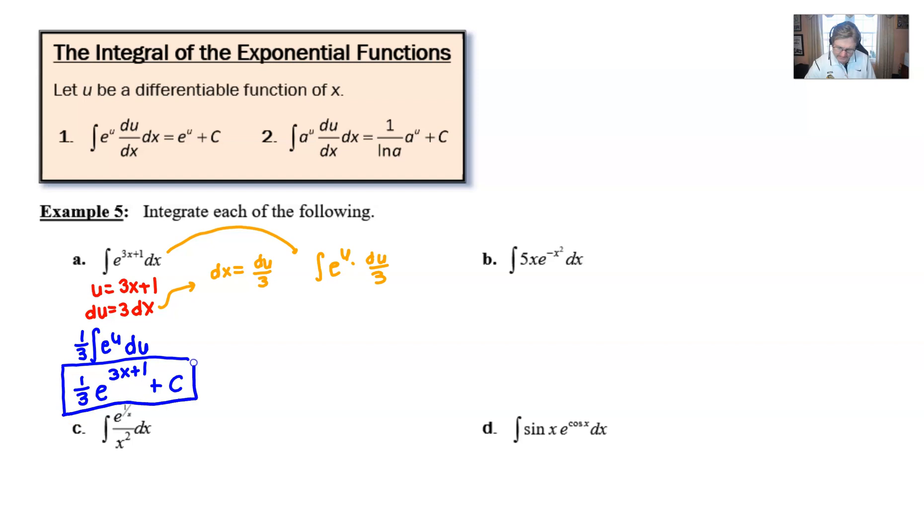All right. So let's take a look at problem b. This is what's kind of interesting. The u substitution is fairly clear, negative x squared. That doesn't change. And the derivative of this u is going to become negative 2x.